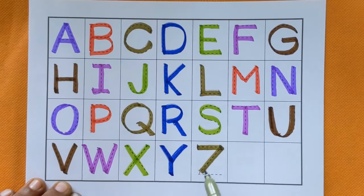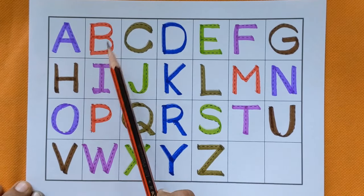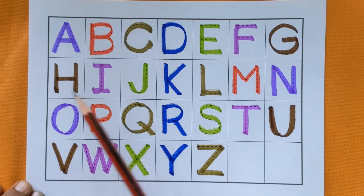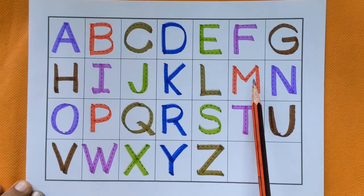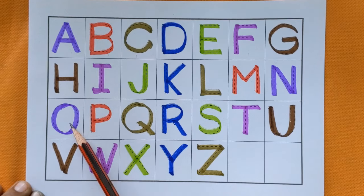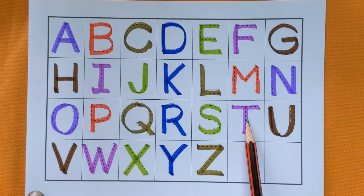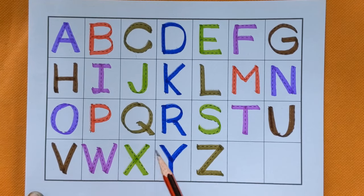Y for young. Z. Z. Z for zoo. A. B. C. D. E. F. G. H. I. J. K. L. M. N. O. P. Q. R. S. T. U. V. W. X. Y. Z.